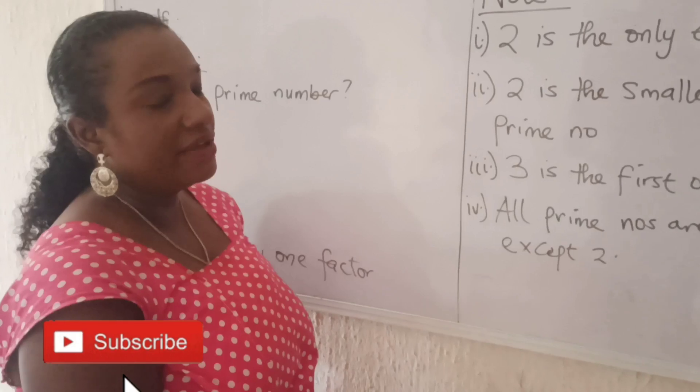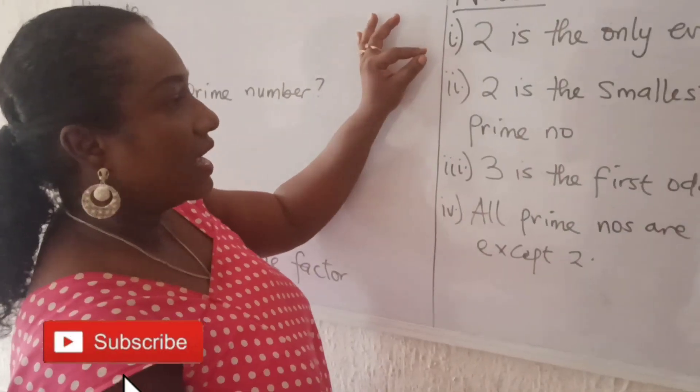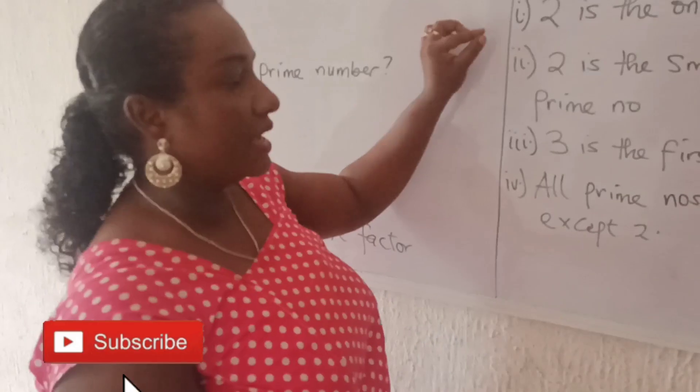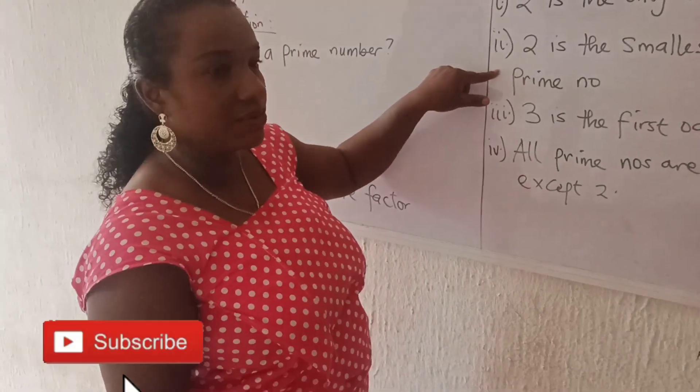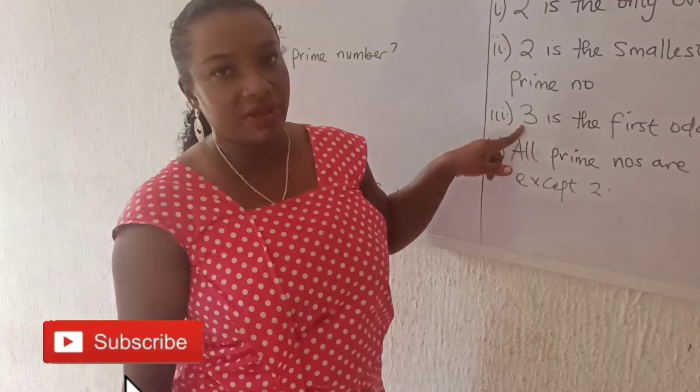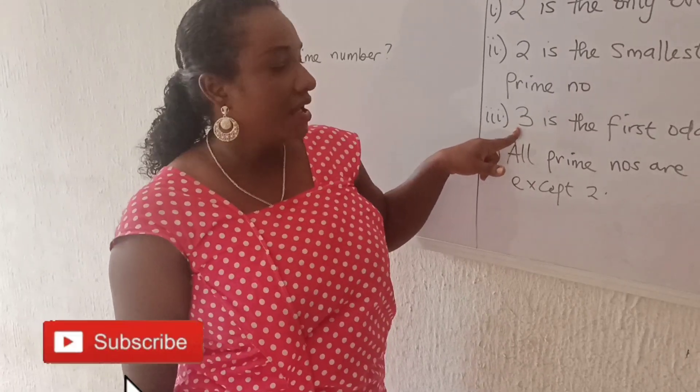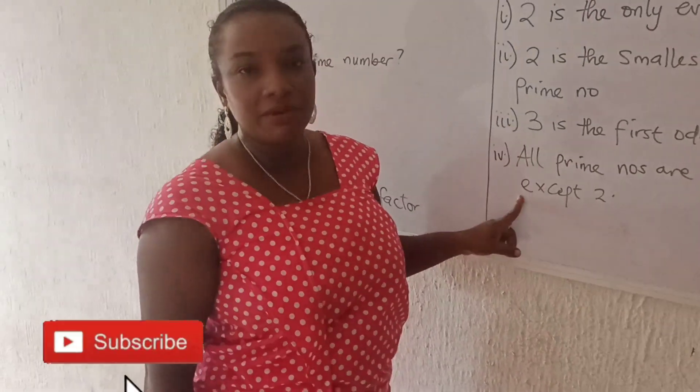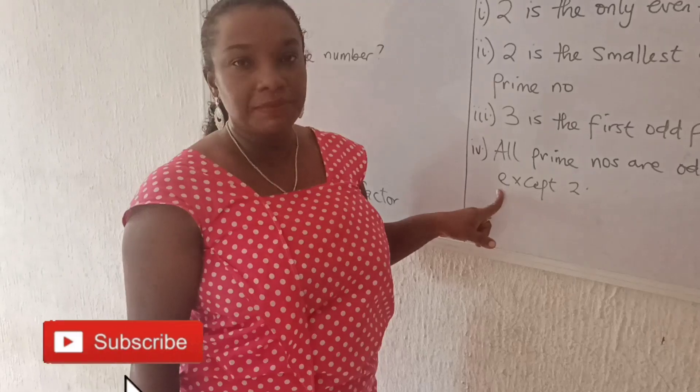That 2 is the only even prime number, and the first prime number is 2. It is also the smallest prime number. The first odd prime number is 3, and all the prime numbers are odd except 2.